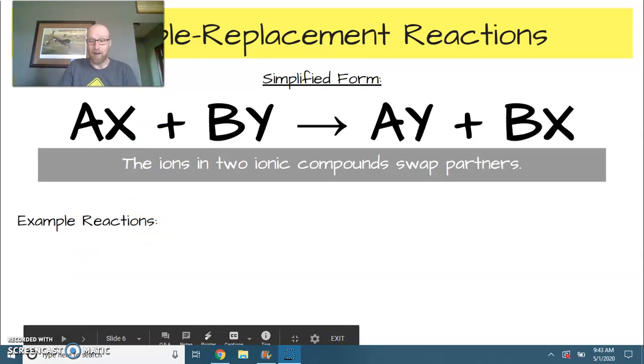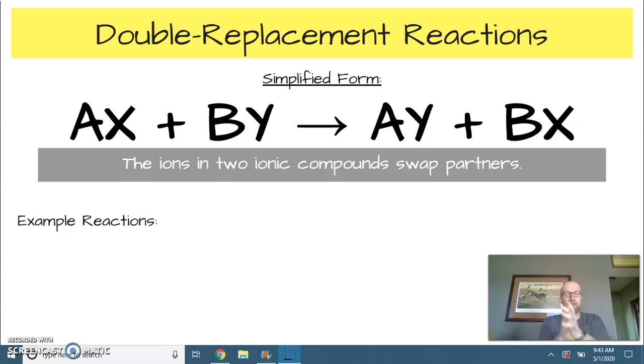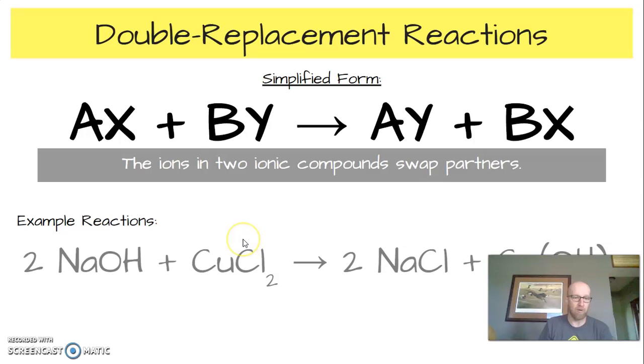The last one is a double replacement reaction. And a double replacement reaction, we have two compounds and they sort of flip dancing partners. Think of kind of like a square dance or something like that where everybody's dancing around and you're just switching partners. So we have the compound AX and the compound BY and they just switch who they're dancing with. A has to go with Y and B has to go with X. These are ionic compounds and we still have to end up with a positive ion and a negative ion together.